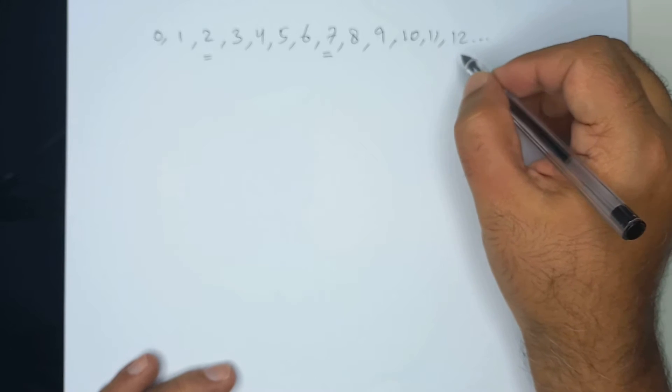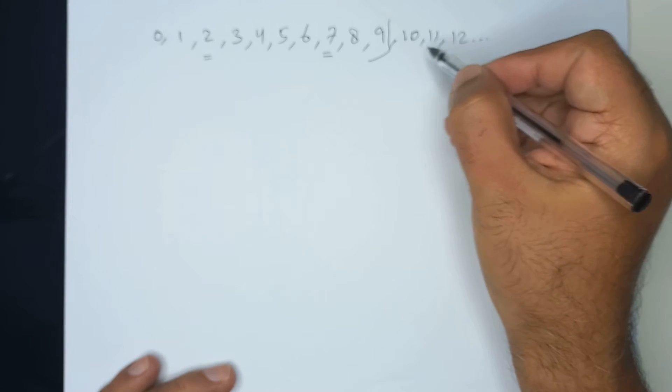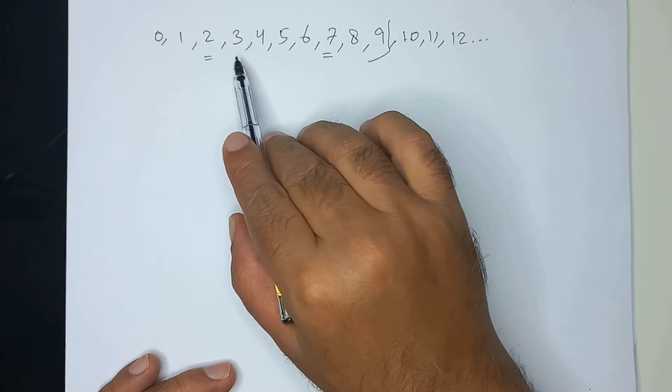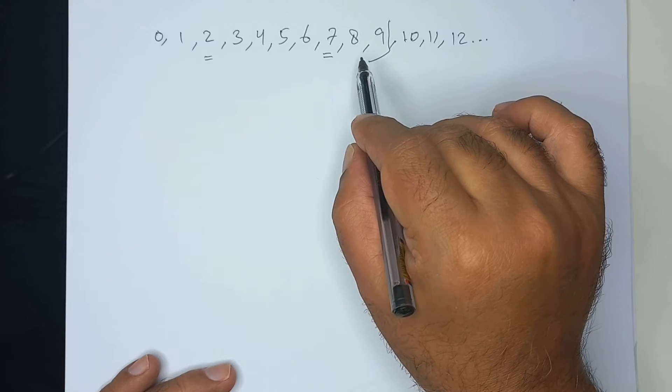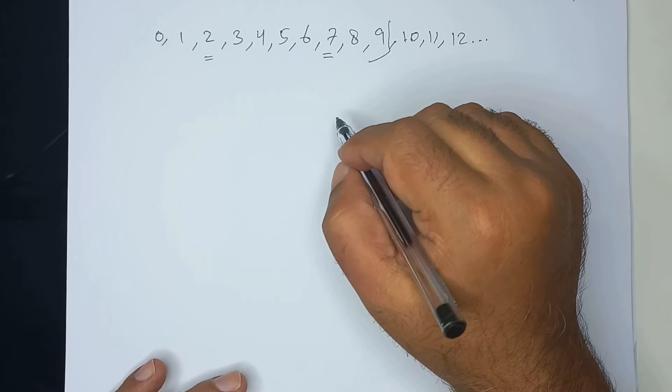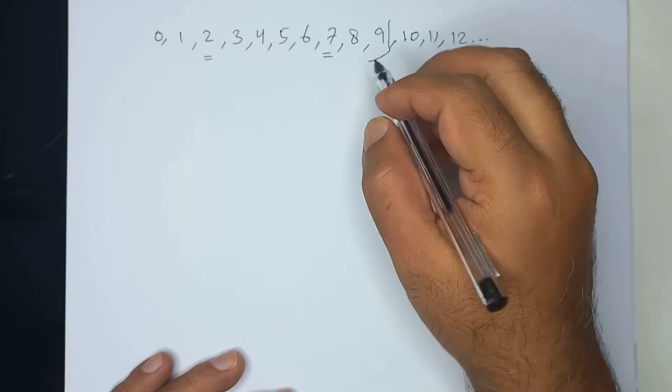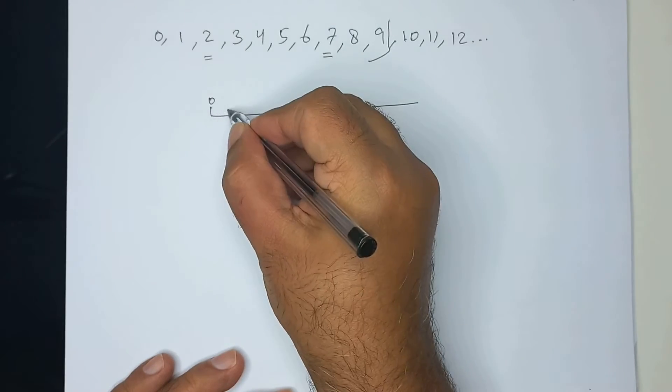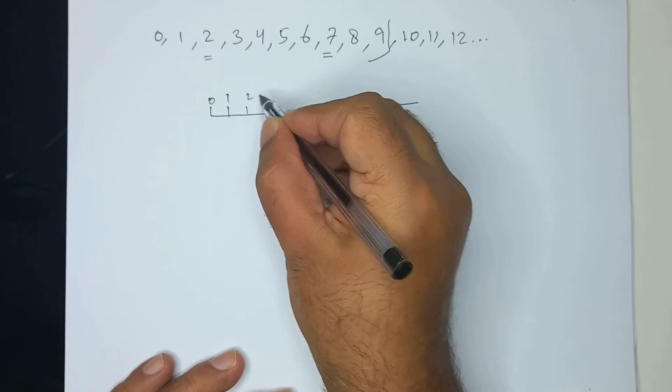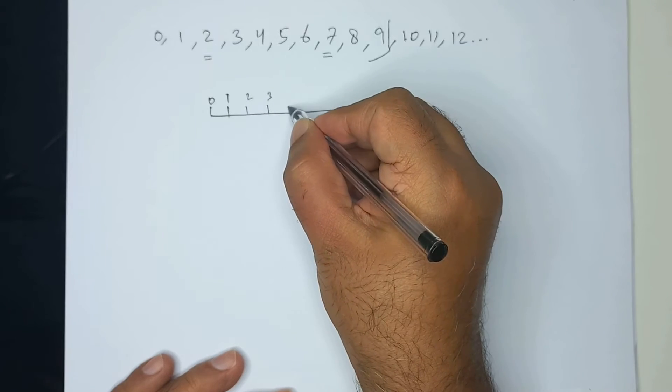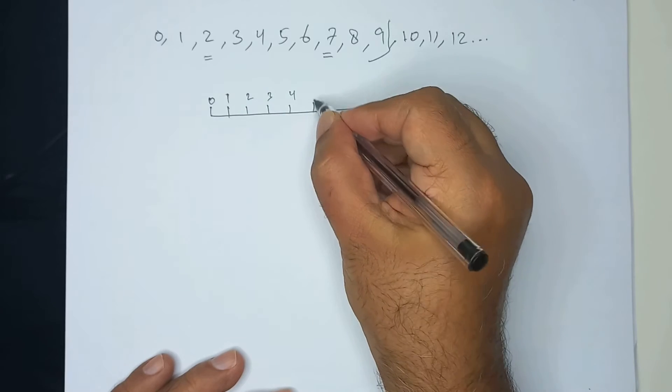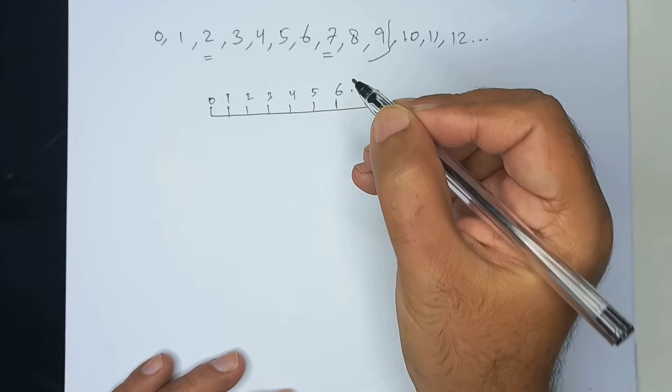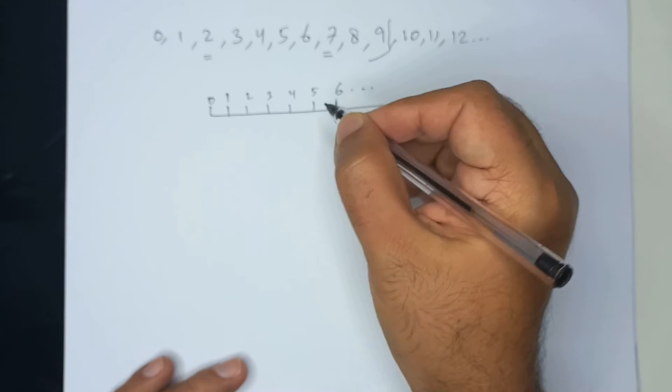All the numbers beyond 9 are made out of the basic numbers 0, 1, 2, 3, 4, 5, 6, 7, 8, 9. A good way to imagine numbers is on a straight line like this: 2, 3, 4, 5, 6 and so on. It's called a number line.